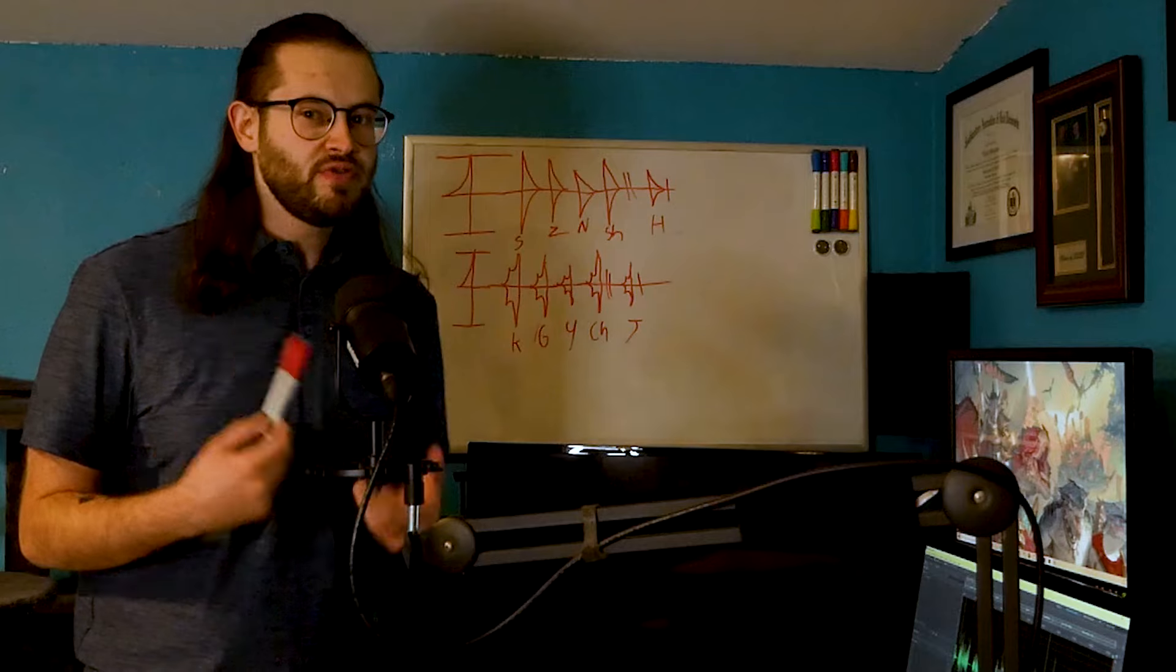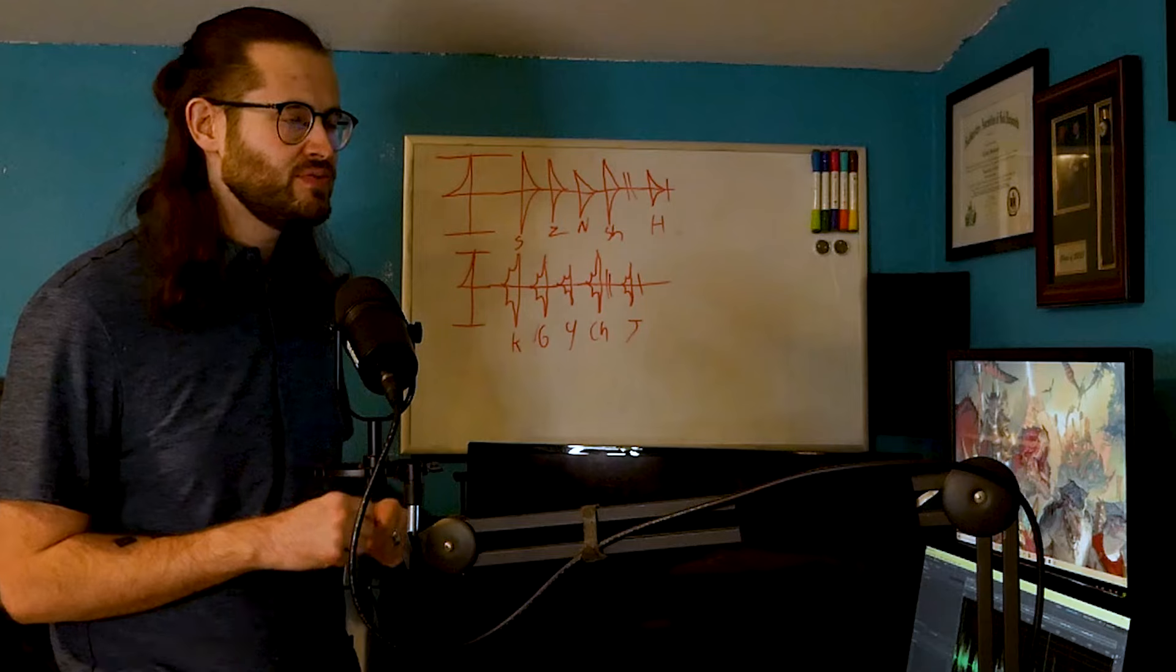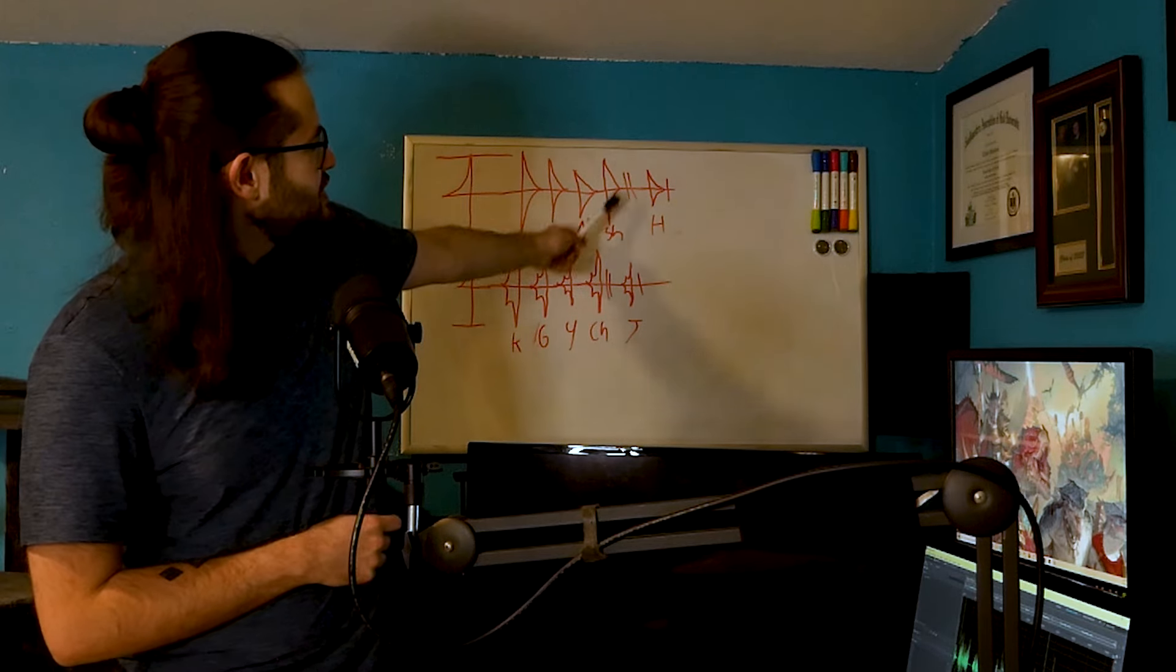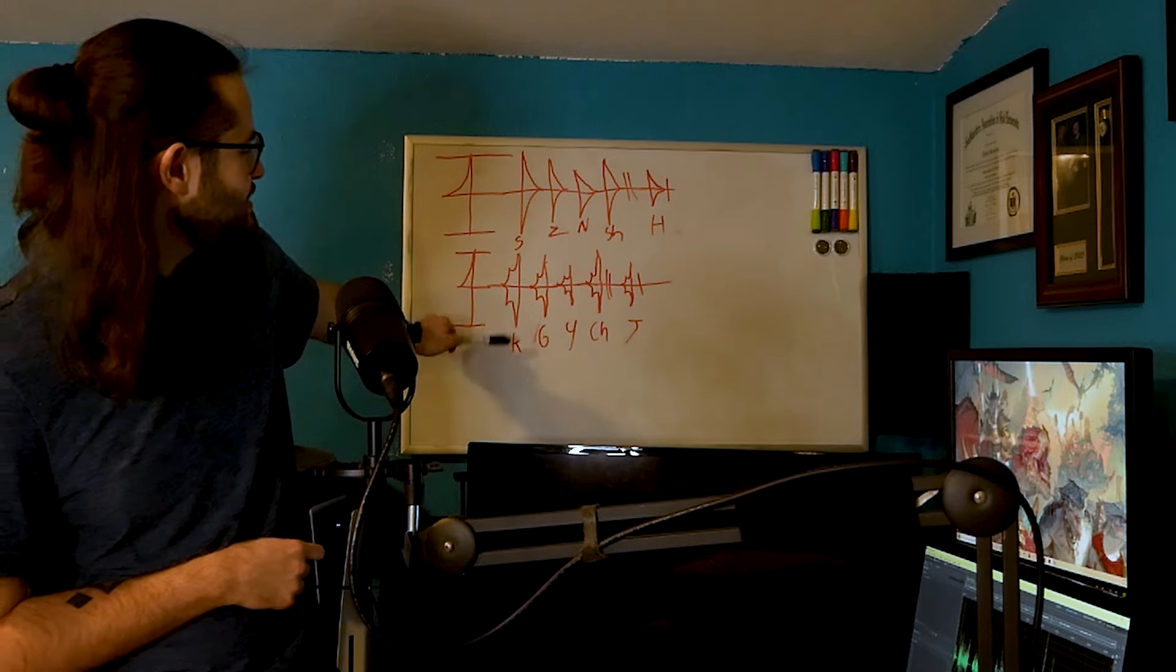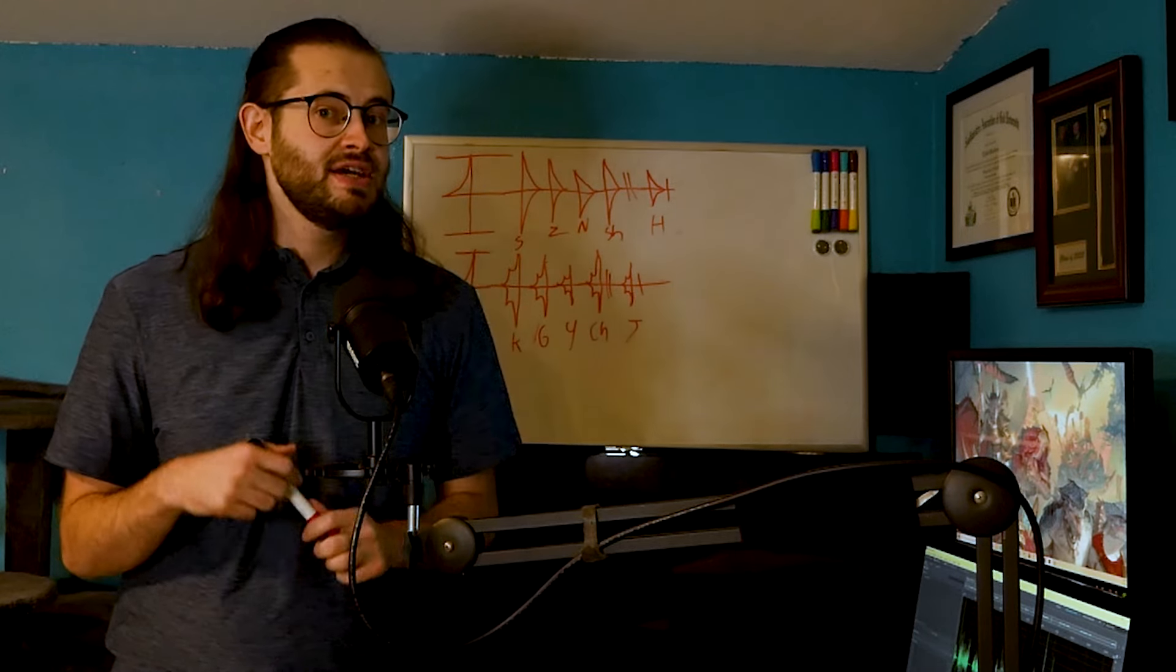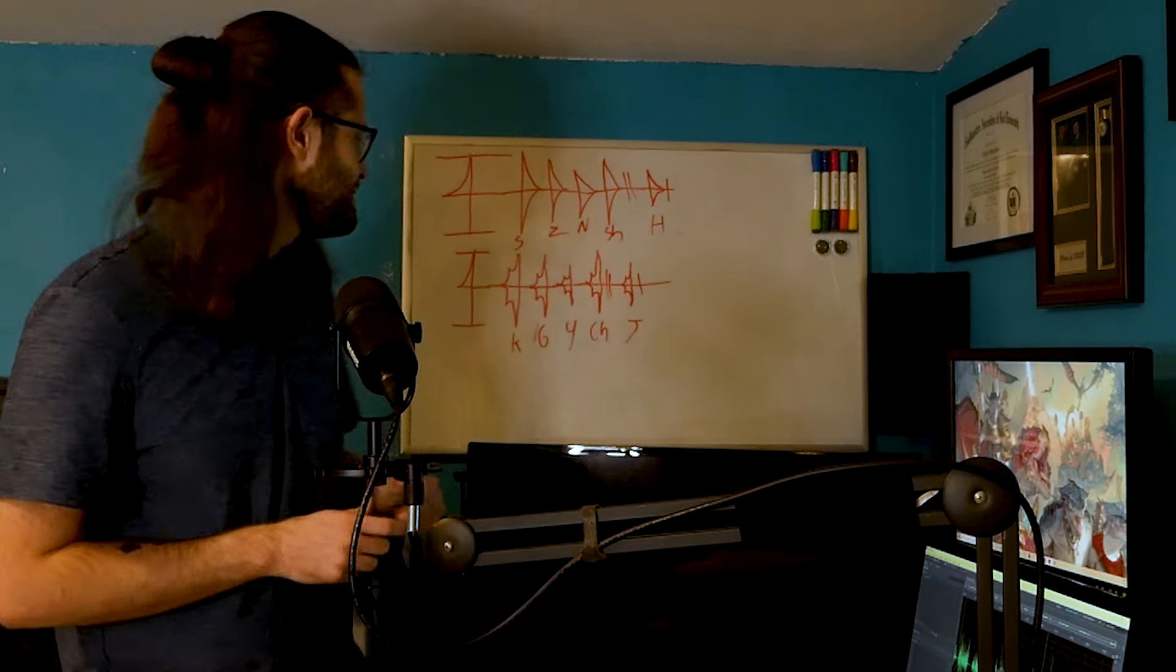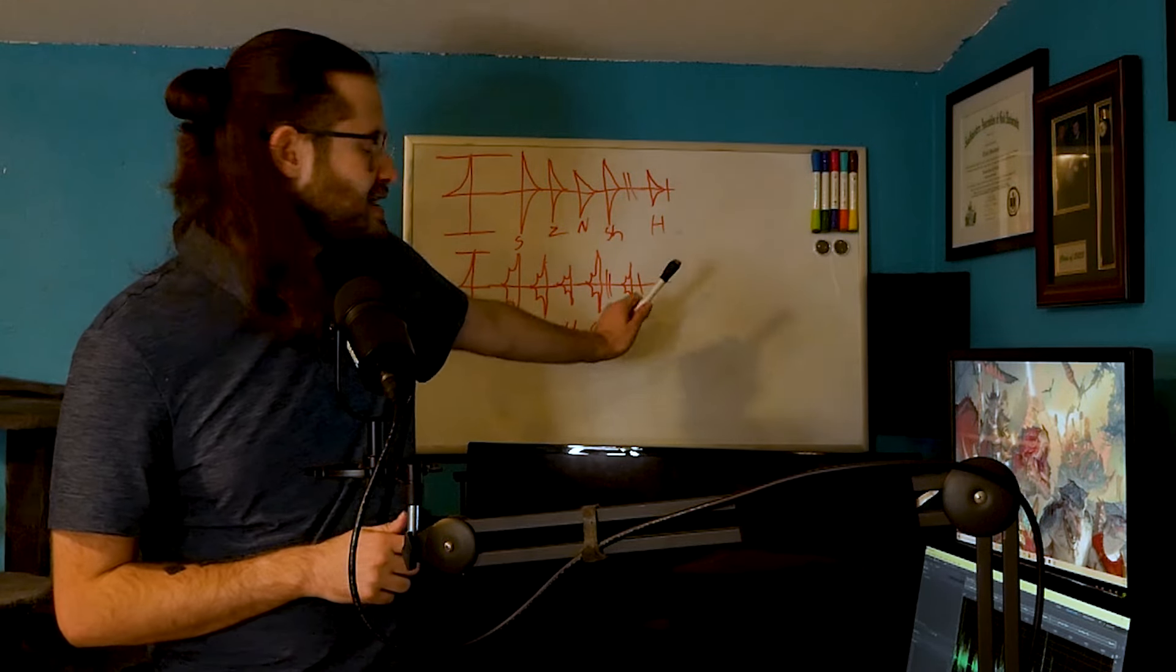Real quick before we move on, I've actually shown you the whole sets of the other three, so I'm just going to go over the last two real quick. The S set, like I said, just a reminder, it's just the T set reversed. S, Z, N, SH, H. Then we have our K set. K is what I would say the hardest, at least for me personally, to write, but it is the most visually distinct, and so I would say it's been the easiest to actually read. K, G, Y, CH, and J.